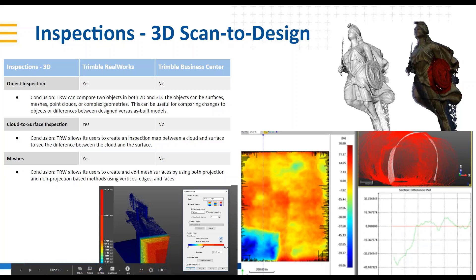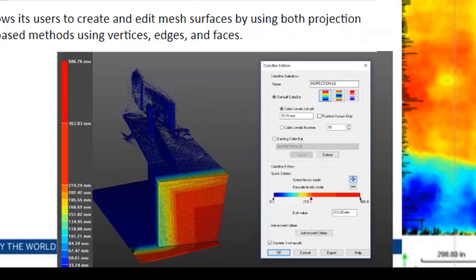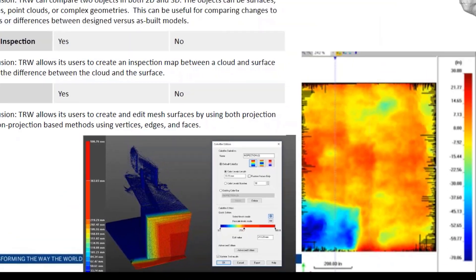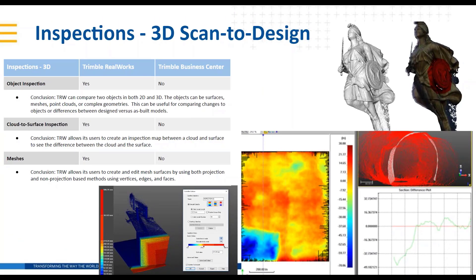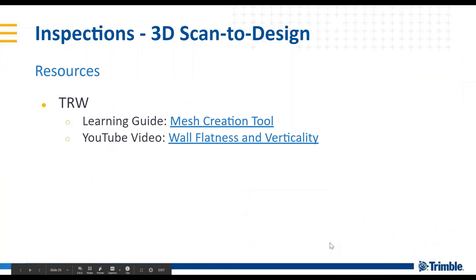On RealWorks, we do the inspection maps where you've got the projection between two surfaces. There's also a tool specifically called the 3D inspection tool, which allows you to take complex shapes such as a building — maybe you've got a design model and you want to compare it to the as-built point cloud. You can set tolerances on the colors you want to use. In the lower left you can see an example of setting a color bar to see where there are deviations, so you can set one range as one color and another range as a different color, to highlight where things are off and how much.